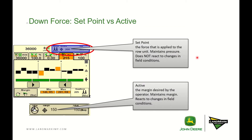Regarding set point versus active: with set point, you set a number and it does not react to changes in field conditions. For example, a set point of 200 pounds means the planter always puts an additional 200 pounds down regardless of ground conditions — you might not achieve correct depth in hard ground, or apply too much in mellow soil. That's where the active margin system comes in: you set the margin and the valves control the planter, increasing or decreasing downforce based on soil conditions. All downforce systems can be operated on a set point basis, but only active pneumatic and individual row hydraulic can be monitored on an active basis.